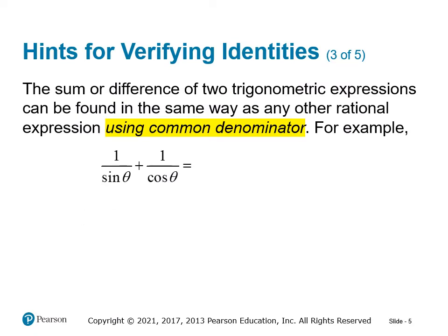The sum or difference of two trig expressions can be found the same way as any other rational expression, using a common denominator. For example, one over sine plus one over cosine — this may seem confusing, but imagine it as one-half plus one-third. You find the common denominator by multiplying them, so two times three is six. Similarly here, the common denominator is sine theta times cosine theta.